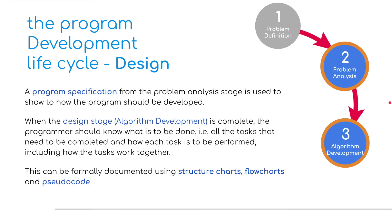We move on then to number three, which is the design — the algorithm development. A program specification from the problem analysis stage is used to show how the program should be developed. When the design stage algorithm development is complete, the programmer should know what is to be done — all the tasks that need to be completed — and how each task is to be performed, including how the tasks will work together. This can be formally documented using structured charts, flowcharts and pseudocode.